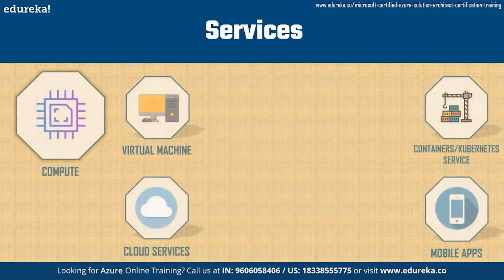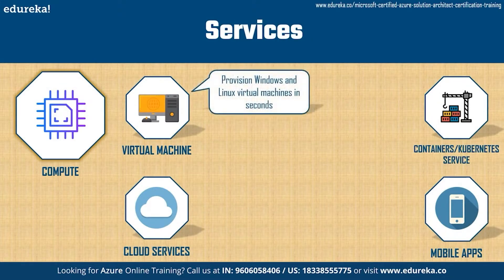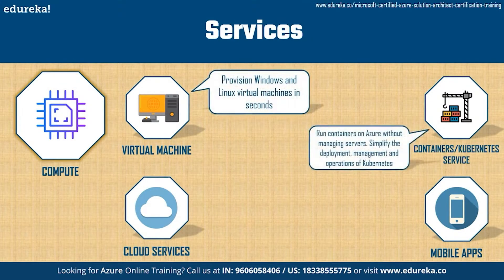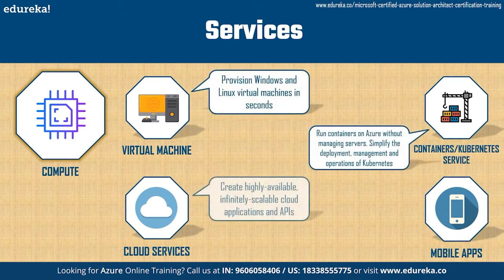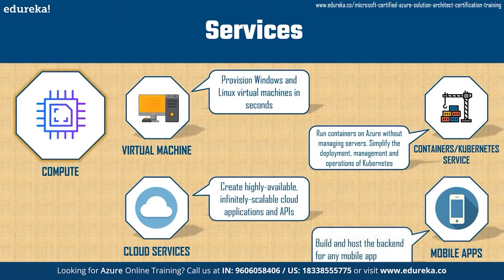The first product John needs is compute. He can use this to deploy and manage virtual machines, containers, and batch jobs, as well as support remote application access. Compute resources in the cloud can be configured with public or private IP addresses depending on whether the resource needs to be accessible to the outside world. Services within compute include virtual machines, containers, Kubernetes service, cloud services, and mobile apps.